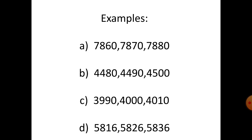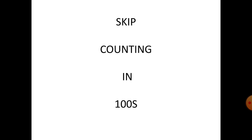Three thousand nine hundred and ninety plus ten equals four thousand, plus ten equals four thousand and ten. Example D: five thousand eight hundred and sixteen, add ten — five thousand eight hundred and twenty-six, and then five thousand eight hundred and thirty-six.